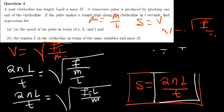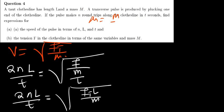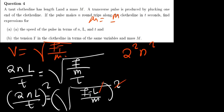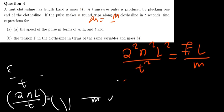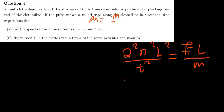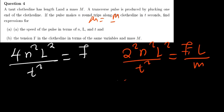We can now square both sides to get rid of the square root. Substituting our expression for velocity: (2NL/T)² equals FL/M. Squaring the left side gives 4N²L² divided by T² equals tension force times L divided by M.